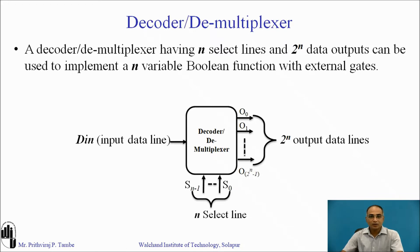A decoder or demultiplexer having n select lines and two raised to n data lines can be used to implement an n-variable boolean function with some external gates. A demultiplexer comes with one data line. In a decoder this data line is not available, but in a demultiplexer we have a data input. With n select lines we can have a maximum of two raised to n output lines.